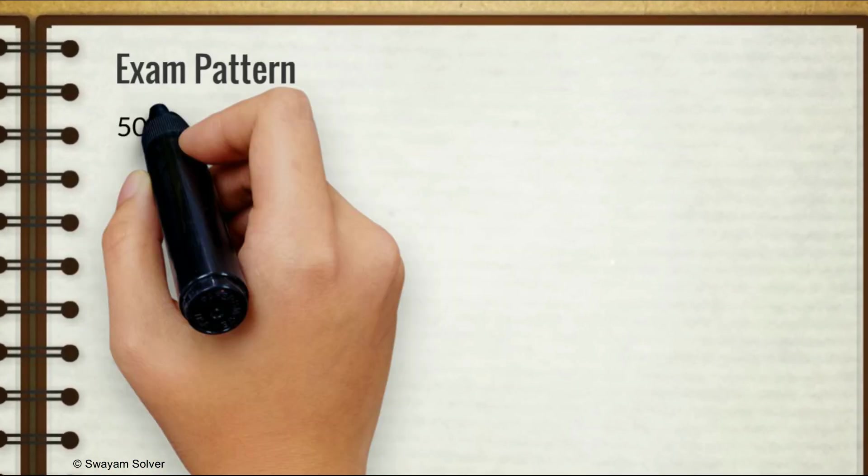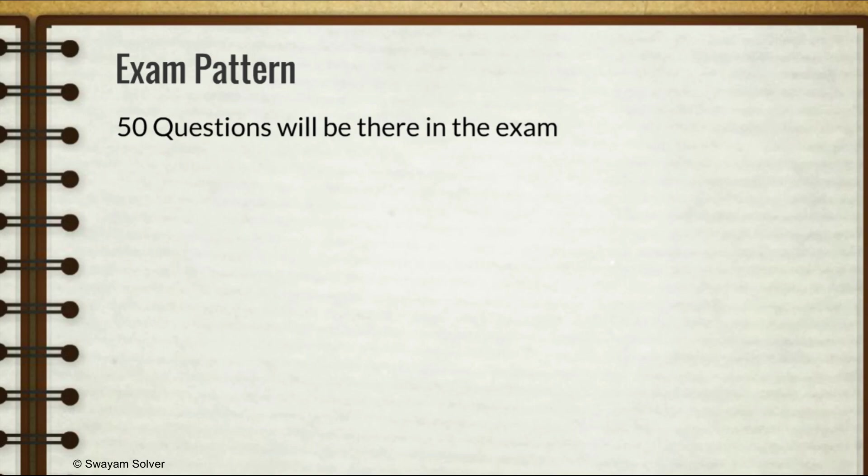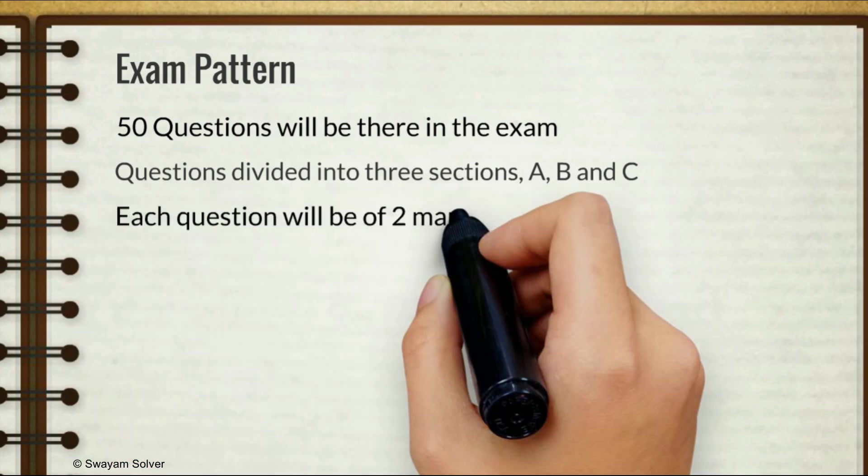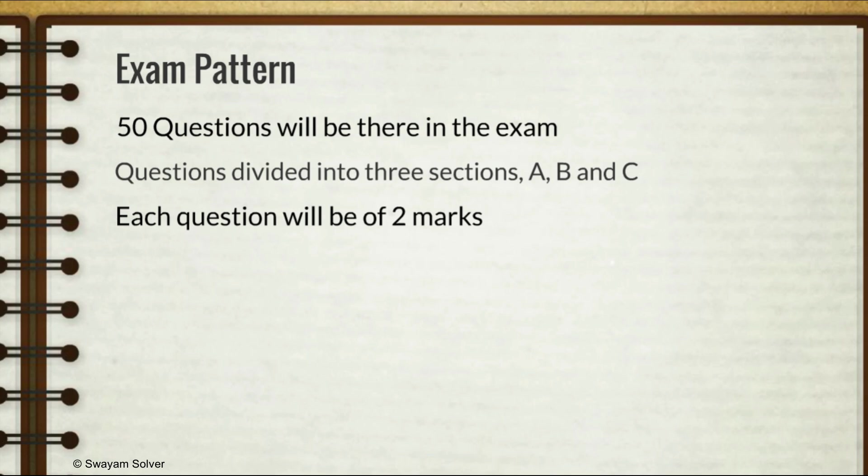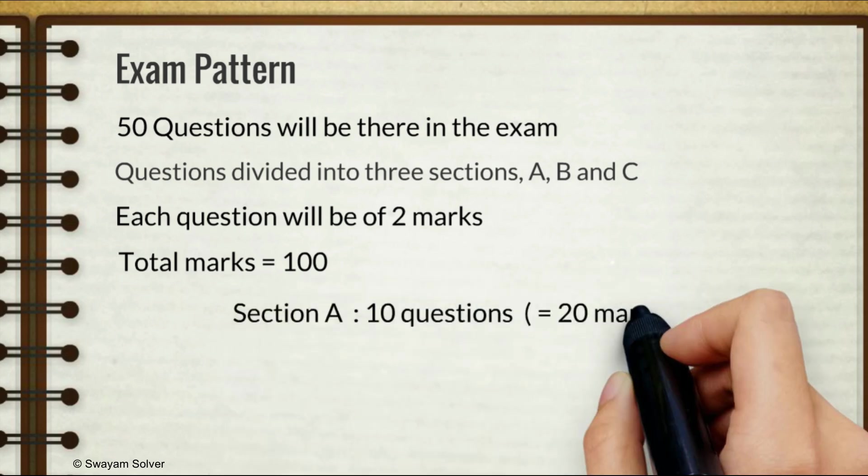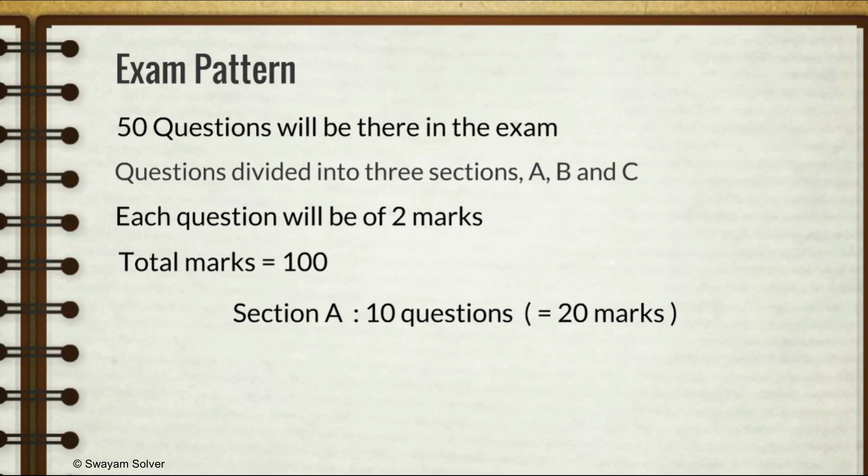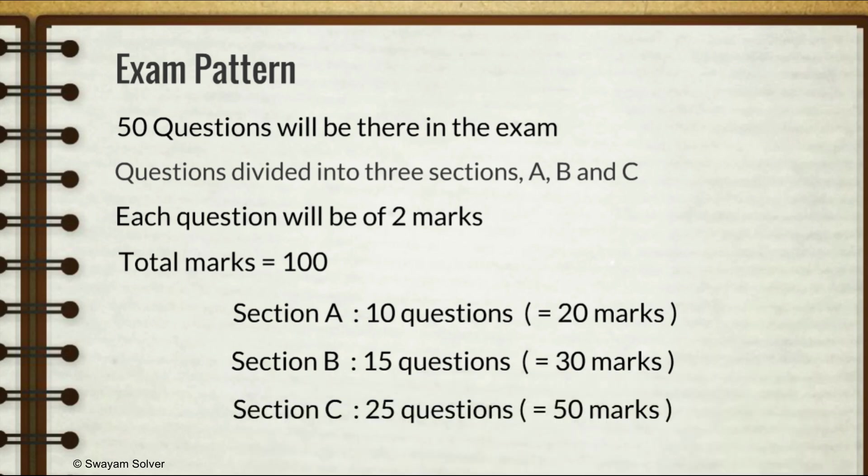There will be 50 questions in the exam and the question paper will be divided into three sections - section A, section B, and section C. Each question will be of two marks, so your exam will be of total hundred marks. Section A will have 10 questions, section B will have 15 questions, and section C will have 25 questions. From the last two times the exam pattern has been like this and probably this time also it would be like this.